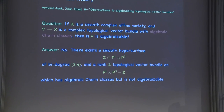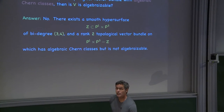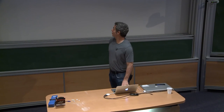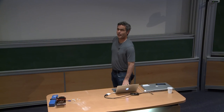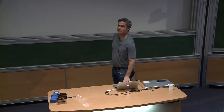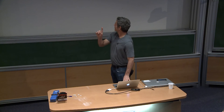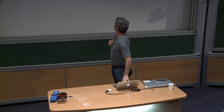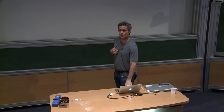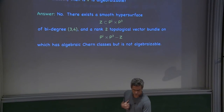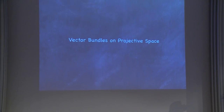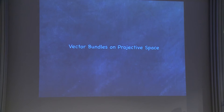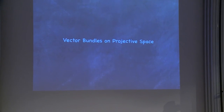Is it stably algebraizable — if you make the rank big enough? This is important that it's rank two. If you make the rank bigger, it'll become algebraizable, I think. So that's a little tour of one thing that's going on. Where we're starting to see some interesting progress is in kinds of varieties that are as far from the Hodge conjecture as you can be — that's the problem of defining algebraic vector bundles on projective space.